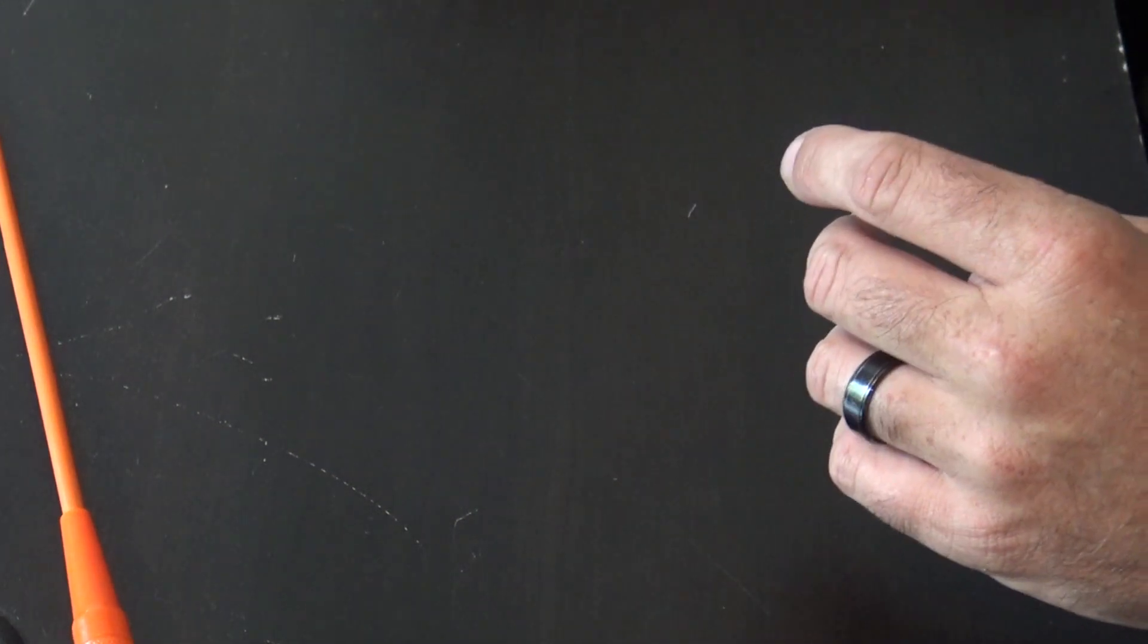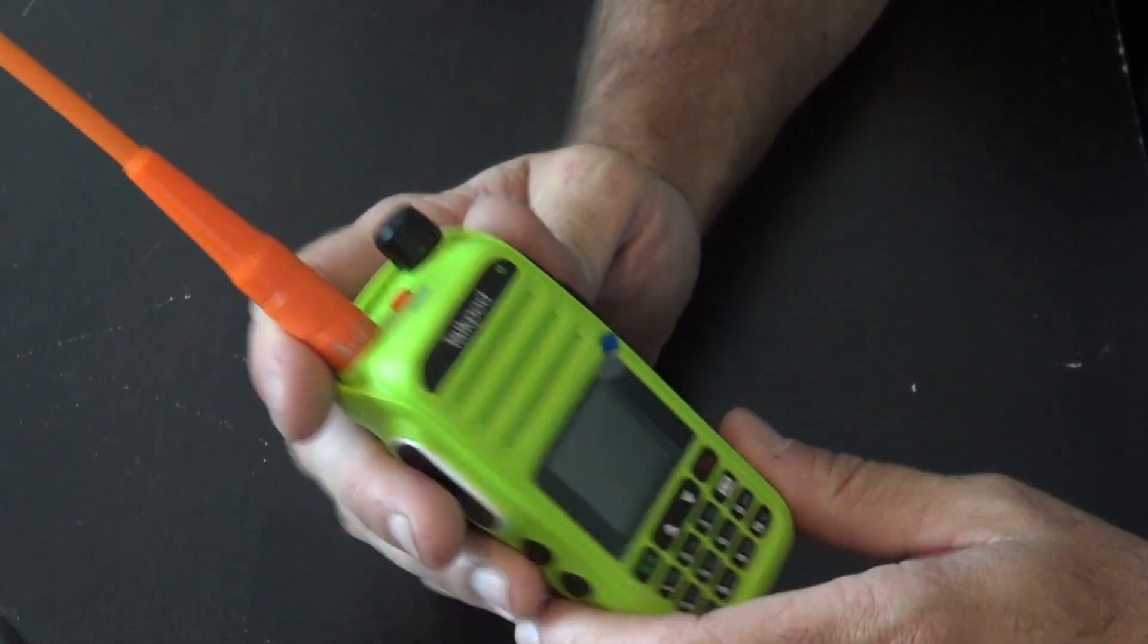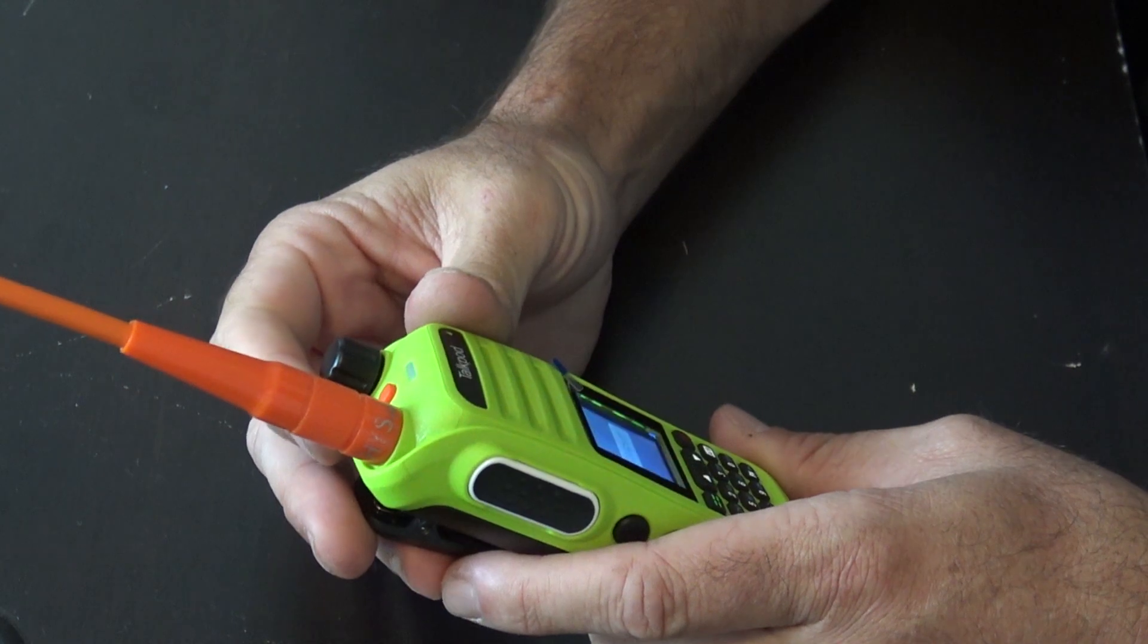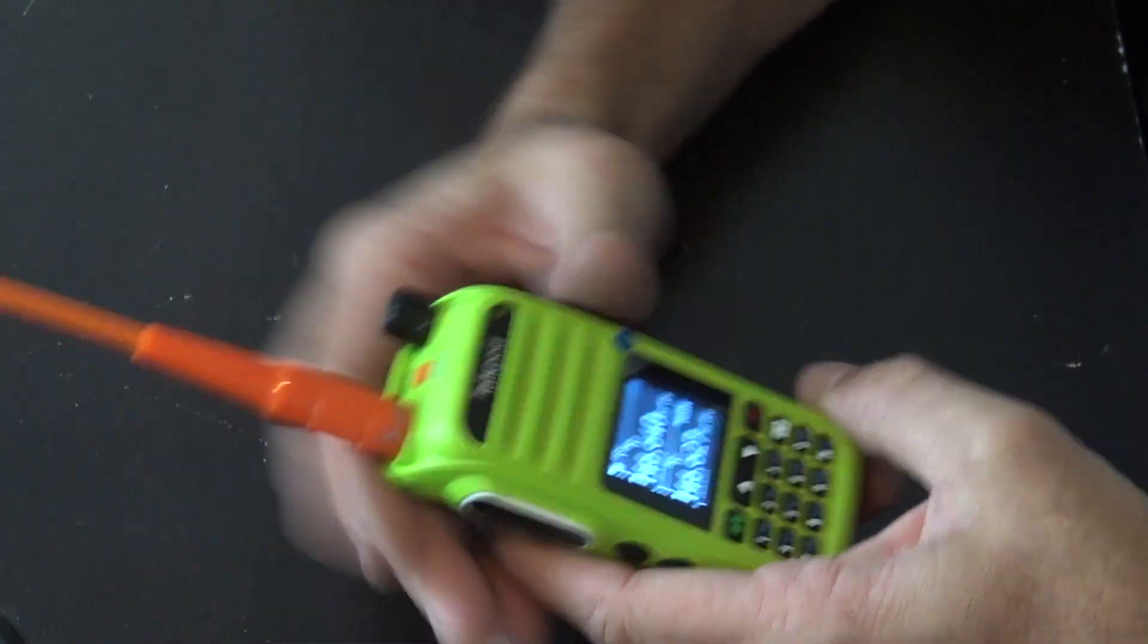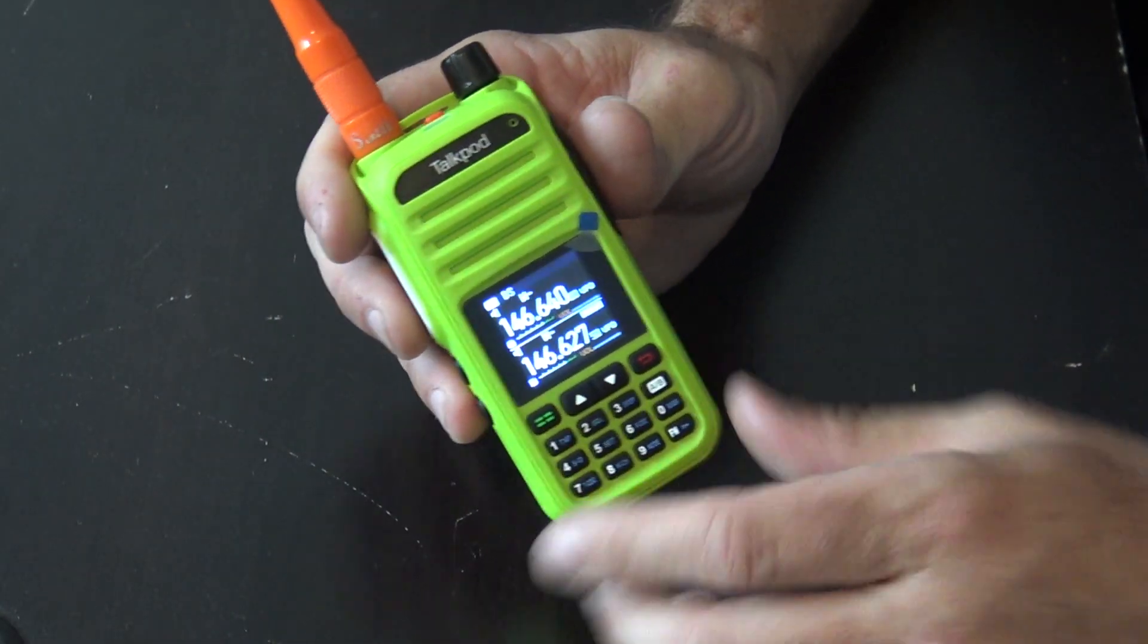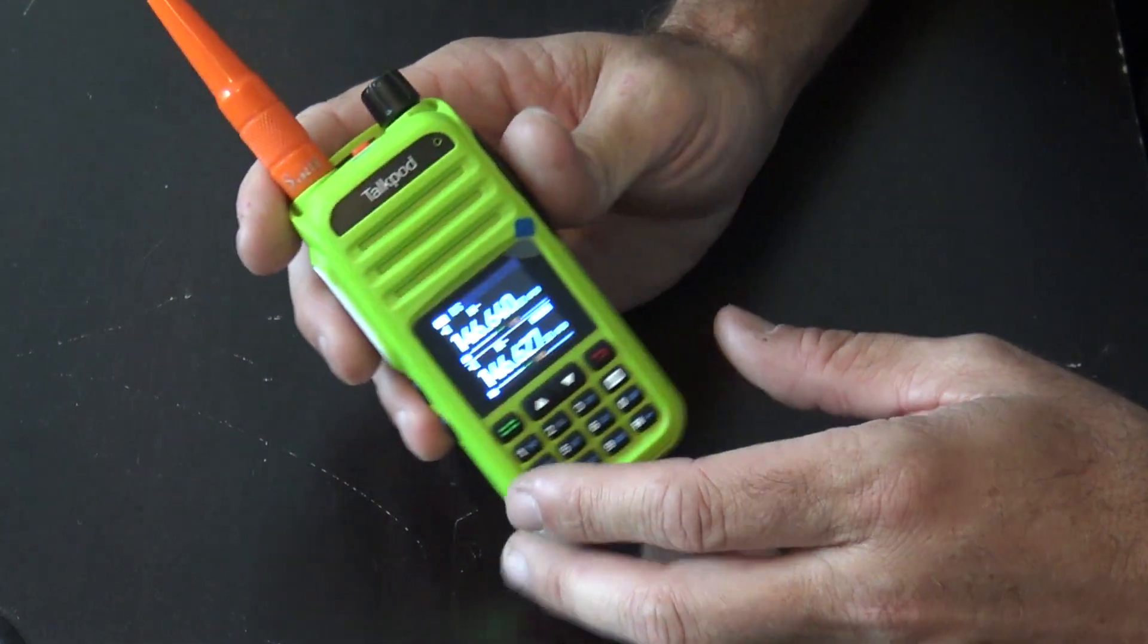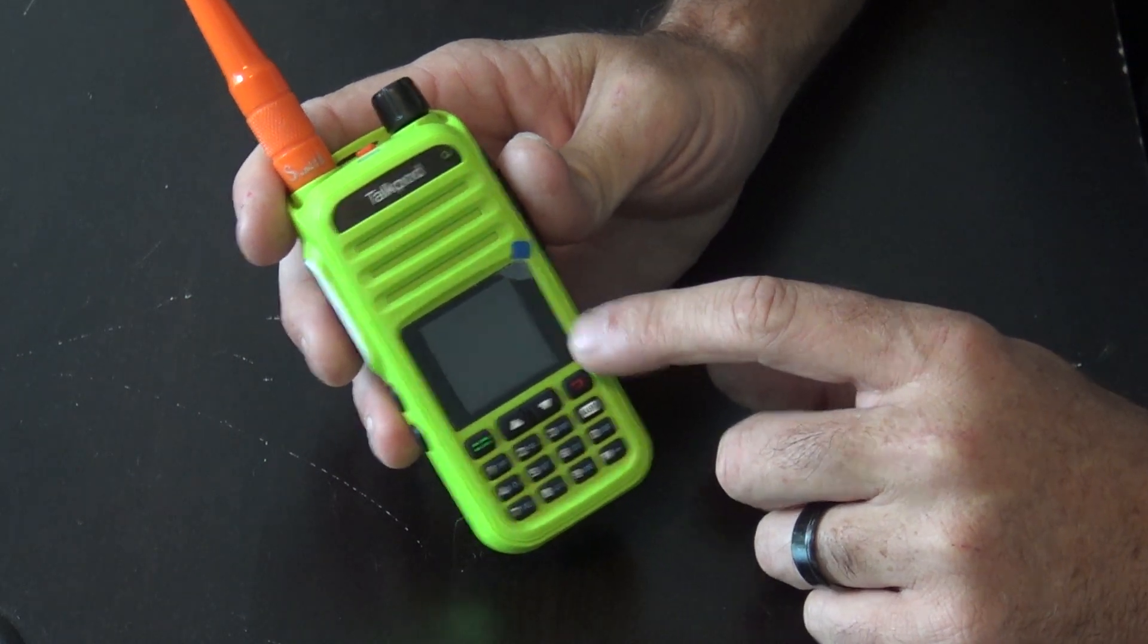When you turn this on, you could turn off the menu language. A lot of the Baofengs had that. You could turn it off if you want. But it's kind of an actual voice that sounds pretty American or English to understand. Dual VFO, but not dual receive. Basically one or the other.